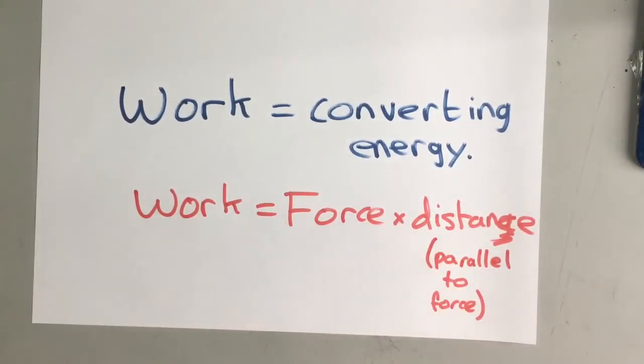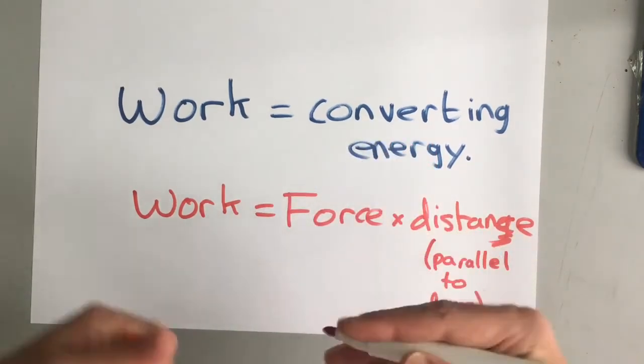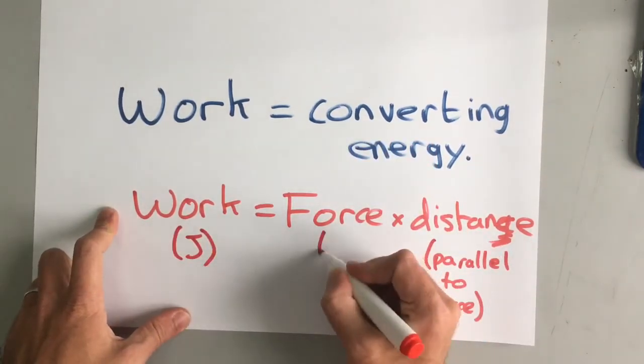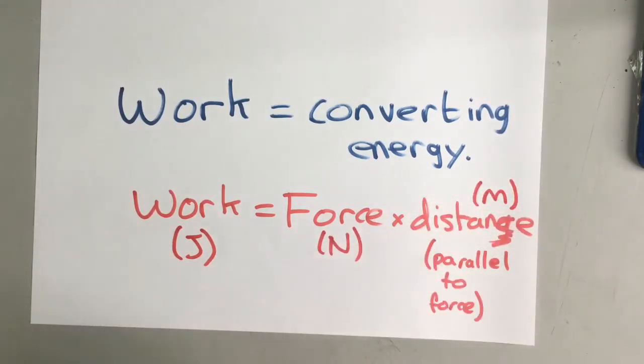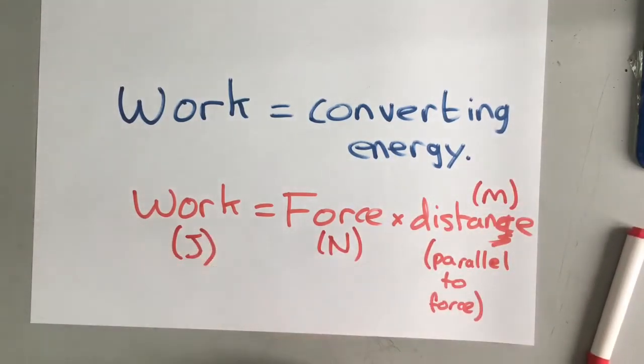So we've got an equation for work done there and work done, because it's an energy, it's how much energy you're converting. It's measured in joules. We know that force is measured in newtons and distance is measured in meters. So work done is measured in joules and it's the amount of energy you are transferring.